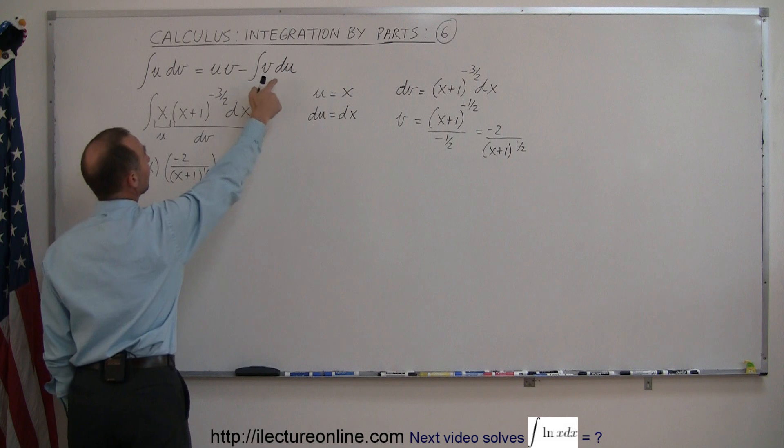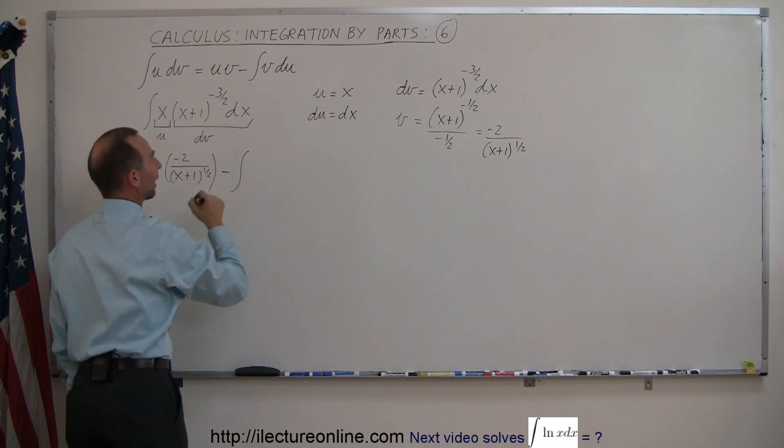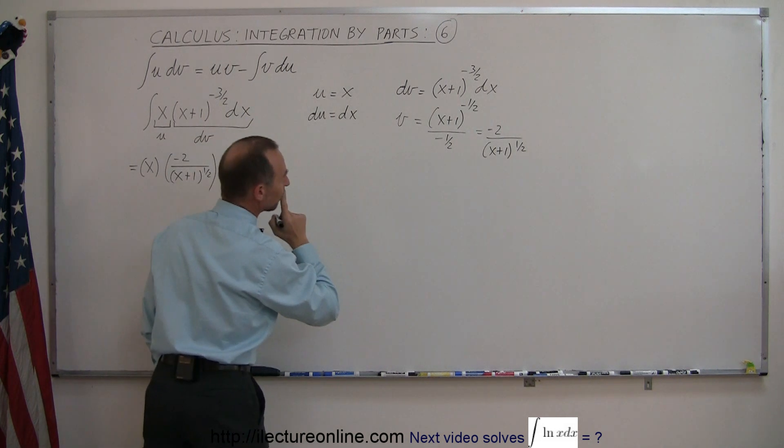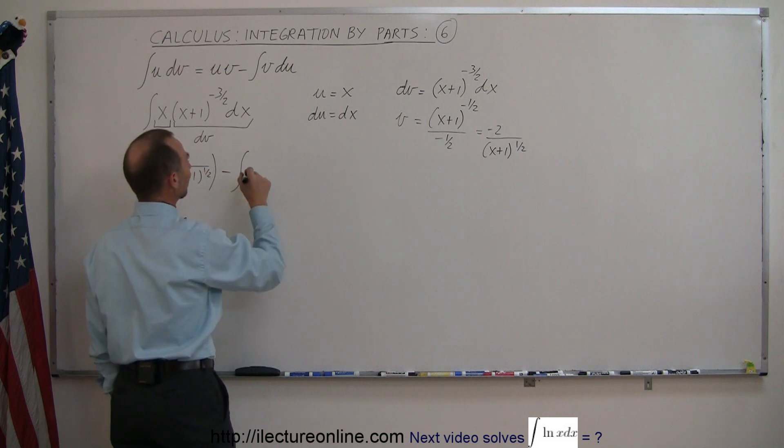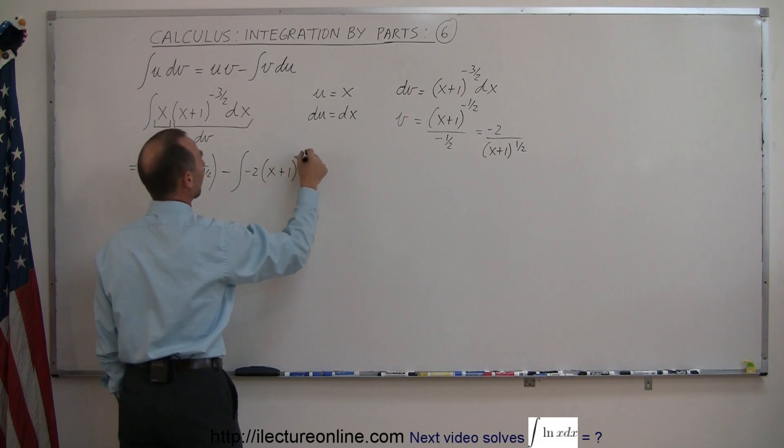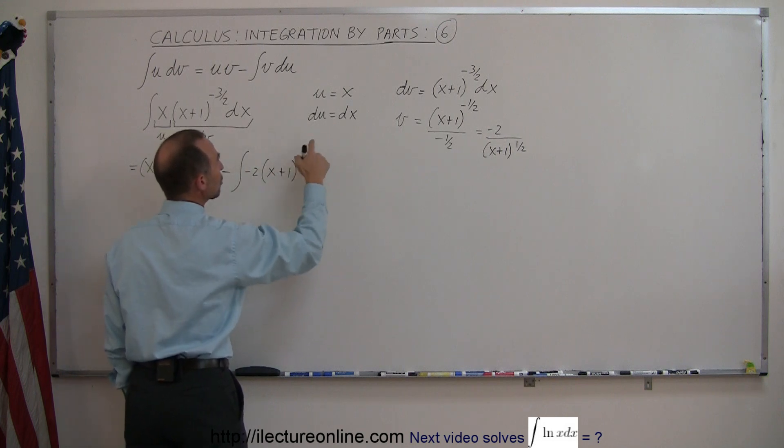All right minus the integral of v du. So the integral of that would be minus 2 times (x+1) to the minus 1 half power and du is dx.